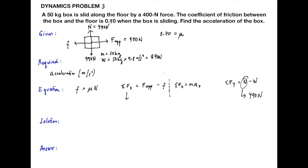The mass is 50 kilograms. The weight is 50 kilograms times 9.8 meter per second squared, which equals 490 Newton. So the weight is 490 Newton and the normal force is 490 Newton upward. The required value is acceleration in meter per second squared. Our equation is: frictional force equals coefficient of friction times normal force.